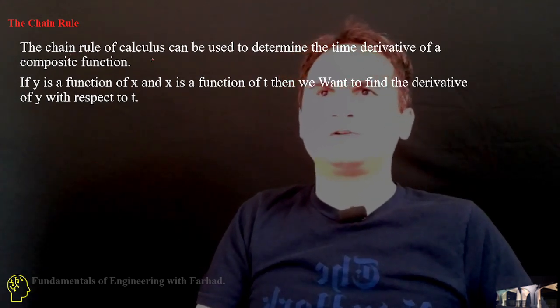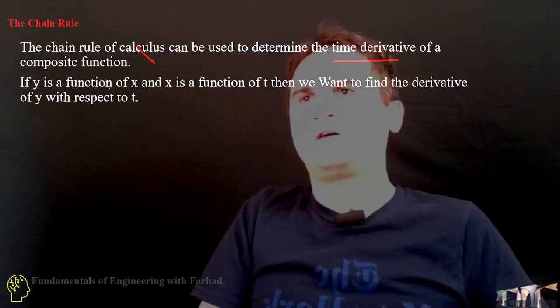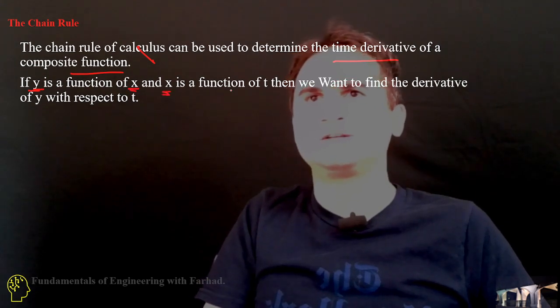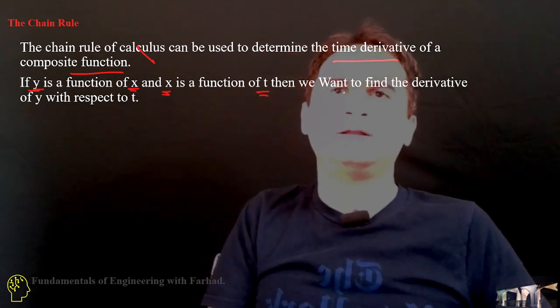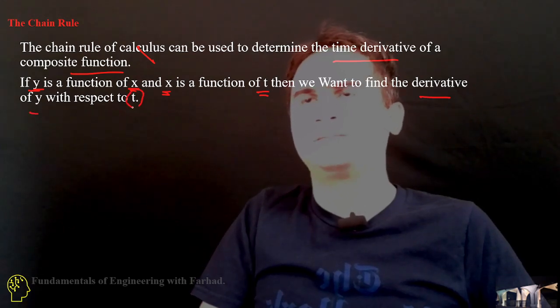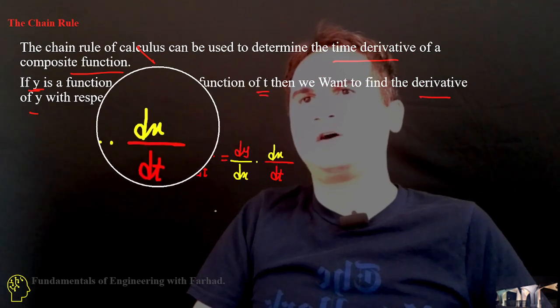The Chain Rule of calculus can be used to determine the time derivative of a composite function. For example, if y is a function of x and x itself is a function of time, then we want to find the derivative of y with respect to time. So, y dot is equal to dy over dt.